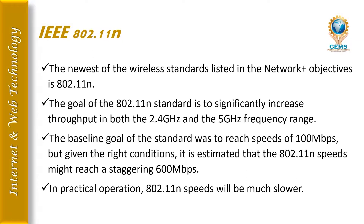IEEE 802.11n is one of the newest wireless standards. The goal of the 802.11n standard is to significantly increase throughput in both the 2.4 GHz and 5 GHz frequency ranges. The baseline goal was to reach speeds of 100 Mbps, but under the right conditions, 802.11n speeds might reach a staggering 600 Mbps. In practice, however, its speeds will likely be much slower.